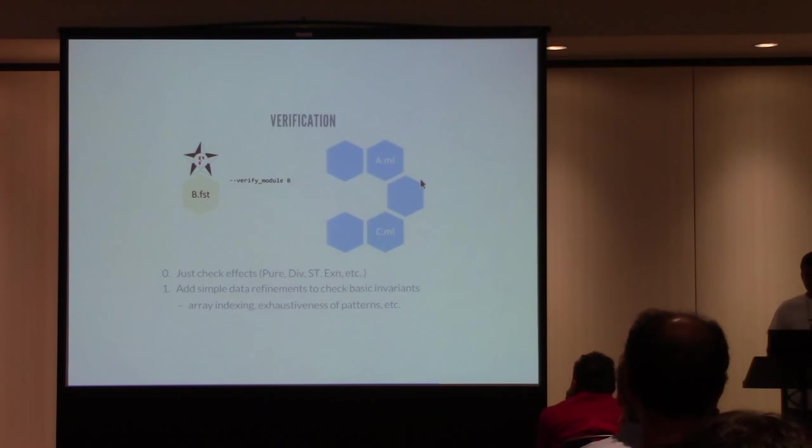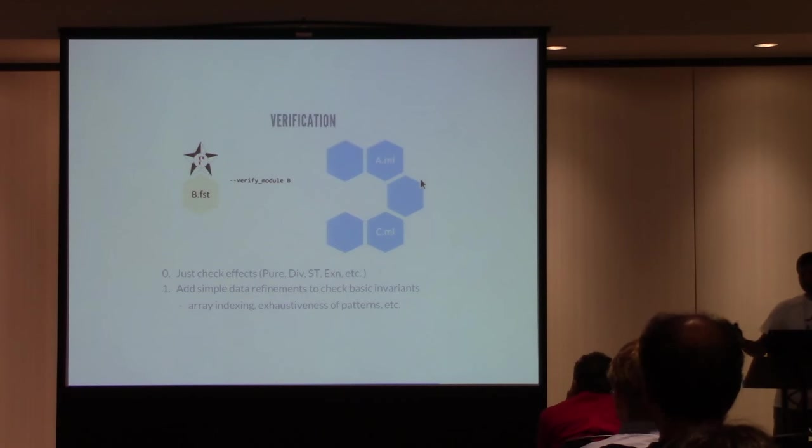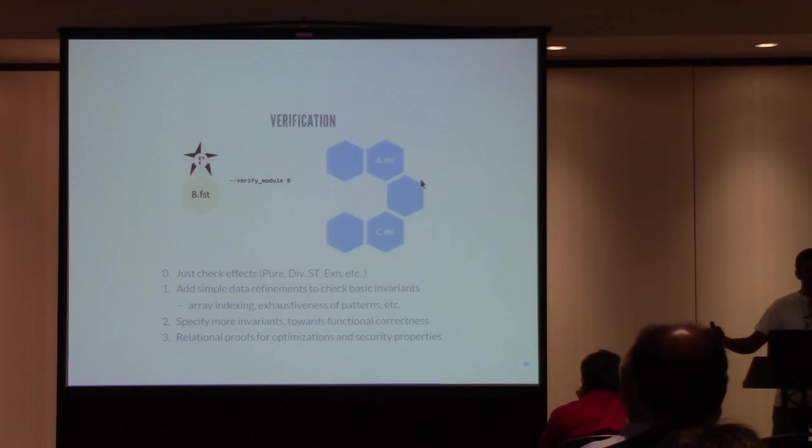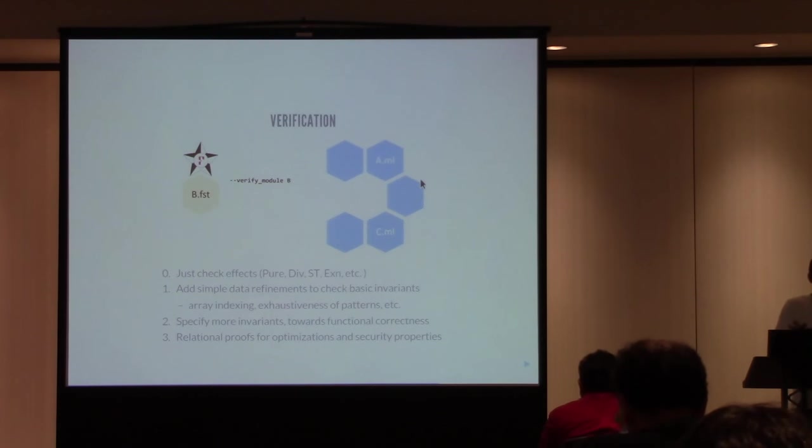Then you can start to add simple data refinements. You can say, for instance, you may be interested in proving that you don't divide by zero or your array indices are within bounds or exhaustiveness of patterns and so on. And all of these things, in the limit, in order to prove any of these properties, you may eventually have to prove functional correctness, but for many common cases, you may be able to get away with just simple invariants. Then you can sort of specify more invariants and maybe go to the style where you have rich, stateful invariants that speak about precise functional correctness properties. And if you're really brave, you can even go one step further, and F-Star has a relational mode where you can prove properties about multiple programs. So you can, say, take a program, you can optimize it, and then prove that the optimized version in fact implements the same function as the original one using our relational mode. And you can also do this for security properties. So you can prove things like non-interference by saying, if you have a program and you reason about two runs of it that differ arbitrarily on the secrets, you can prove that their results are low equivalent, for instance.